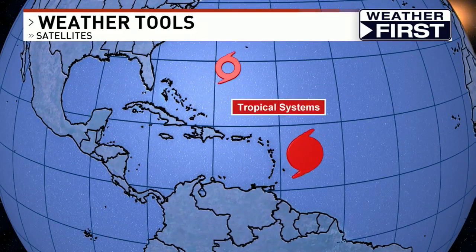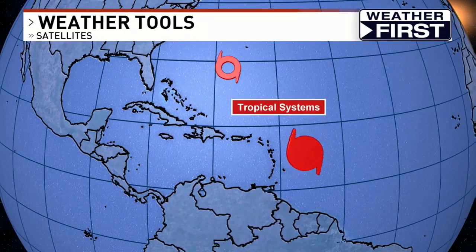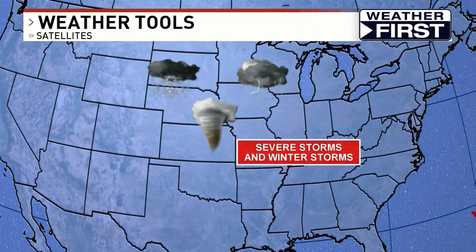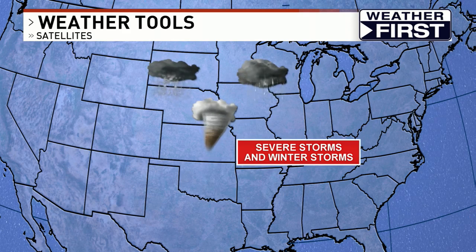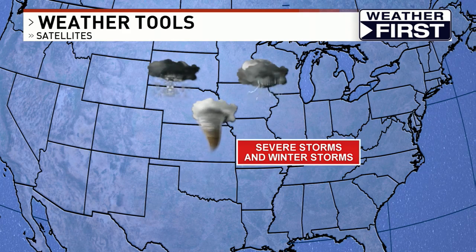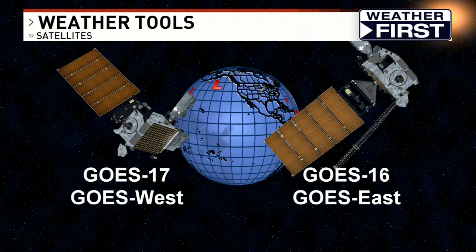Satellites are very, very important. We have what's known as the GOES satellites, about 23,500 feet aloft. They're used to forecast tropical storms, and in the central part of the country, they're used to forecast severe weather and winter storms. GOES-R, or GOES-16, covers the eastern part of the country, while GOES-West, or GOES-17, covers the western part of the country. Two satellites that work in tandem to help forecast severe weather.